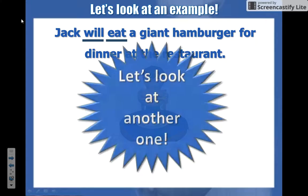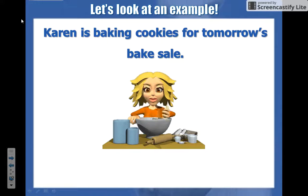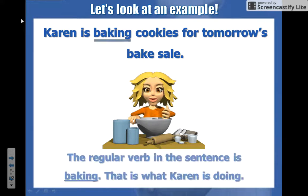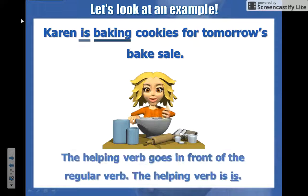'Turn is baking cookies for tomorrow's bake sale.' Again, I'm asking myself what word shows action. 'Baking' shows action — we can see it. So then I'm looking for the word right next door to it. Does 'is' help 'baking'? It is a helping verb. So 'baking' is our action verb and 'is' is our helping verb.